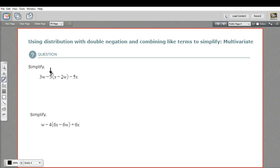What this means is this number, including the negative sign, so this is a negative 3 here, should be multiplied by both of the terms inside the parentheses. To get rid of these parentheses, we have to multiply negative 3 by x and multiply negative 3 by negative 2w.